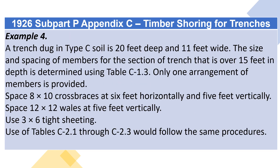Example 4: A trench dug in Type C soil is 20 feet deep and 11 feet wide. The size and spacing of members for the section of trench that is over 15 feet in depth is determined using Table C1.3. Only one arrangement of members is provided: space 8×10 crossbraces at 6 feet horizontally and 5 feet vertically. Space 12×12 whales at 5 feet vertically. Use 3×6 tight sheeting. Use of Tables C2.1 through C2.3 would follow the same procedures.